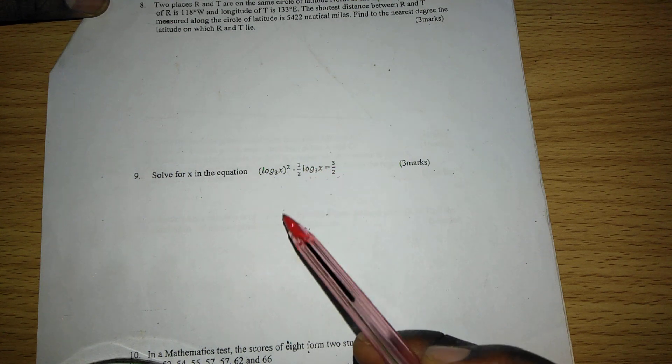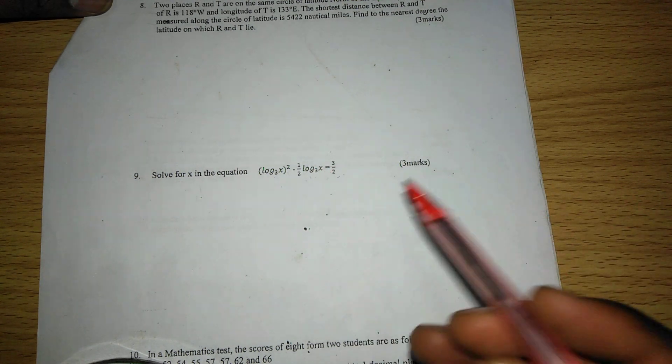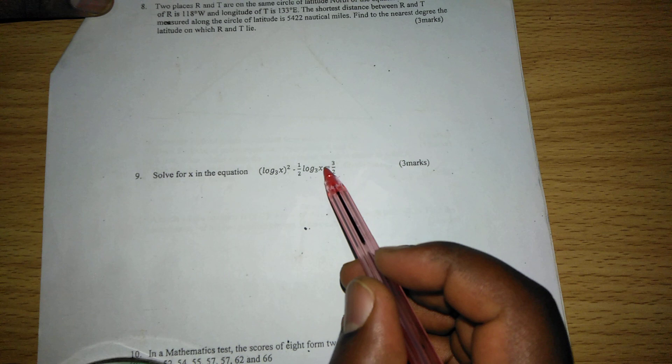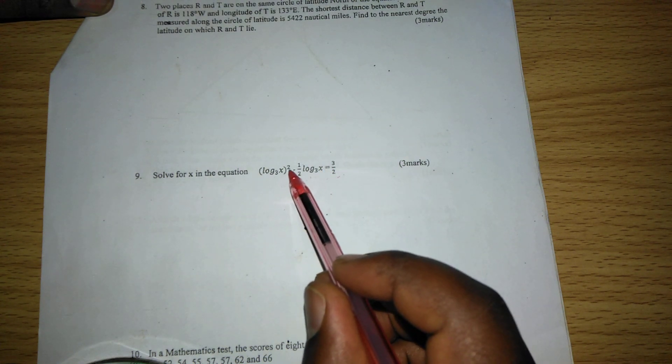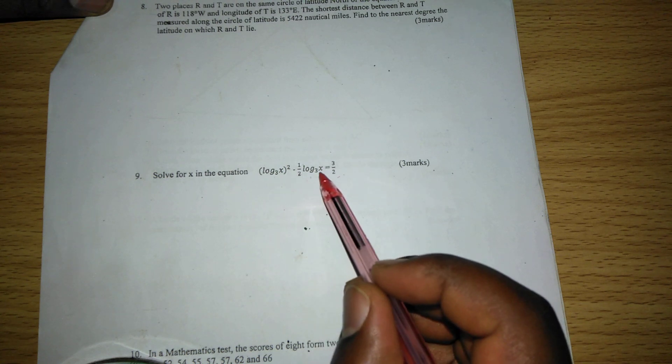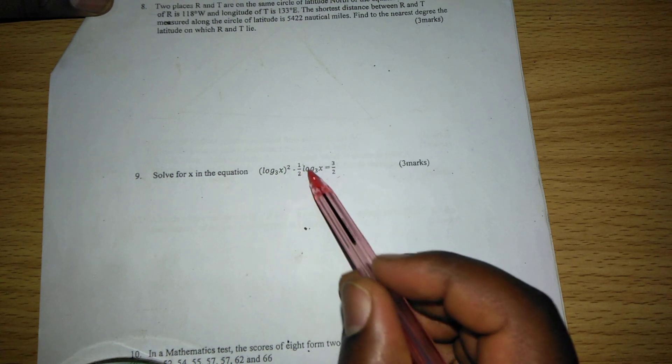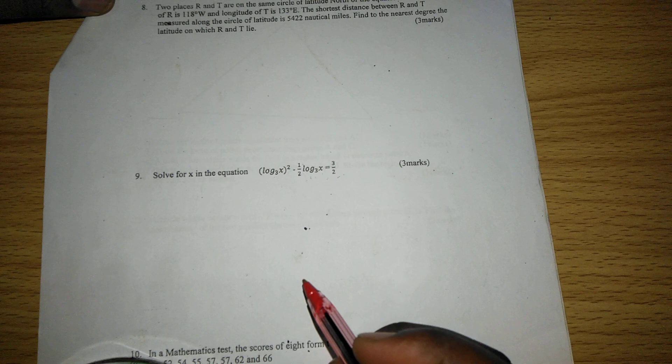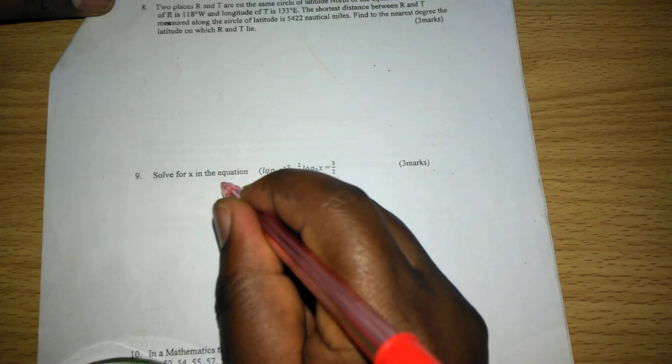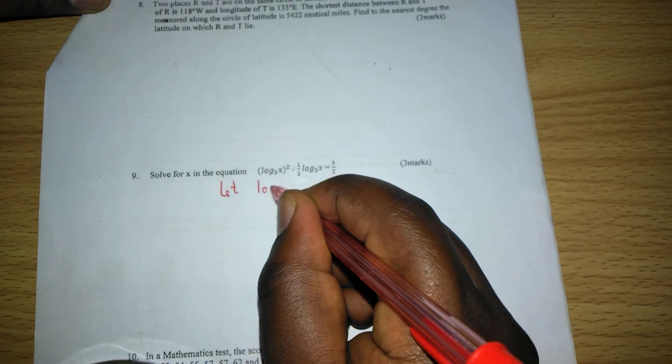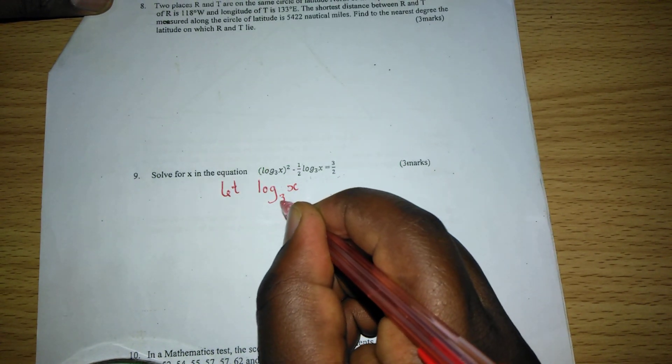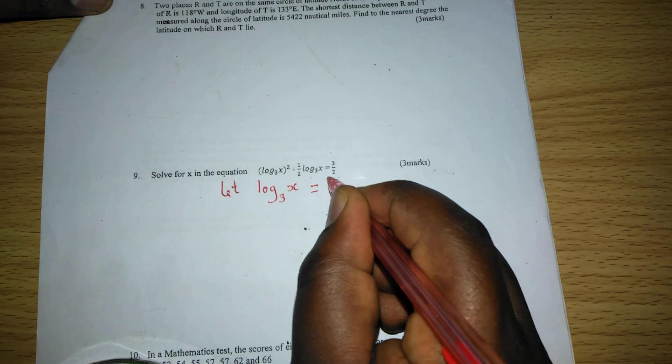Examining the nature of this equation, we can see that the logarithm of x to base 3 is appearing twice. Here it is squared, and on the other side we have its half. Because the logarithm of x to base 3 is common, we can let it be a certain unknown. For example, we can let the logarithm of x to base 3 be something like t.